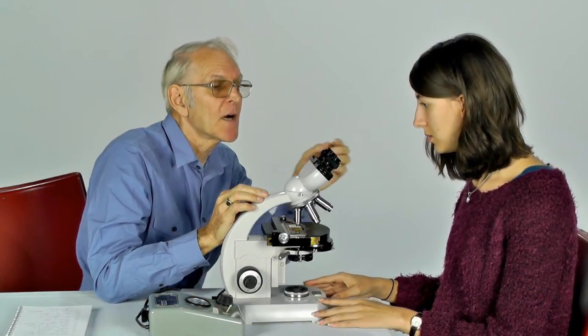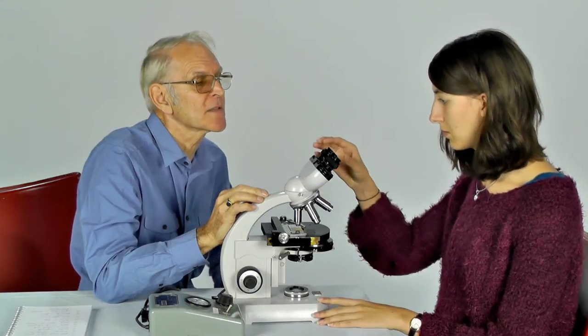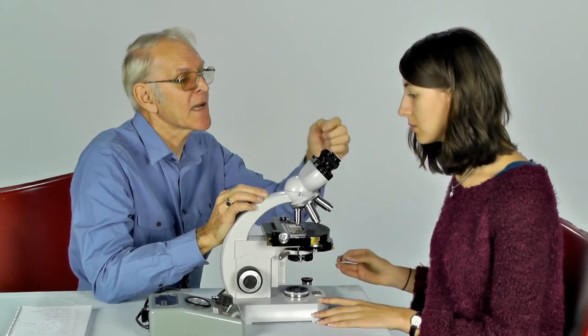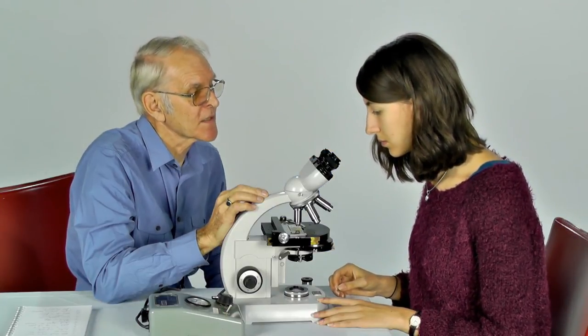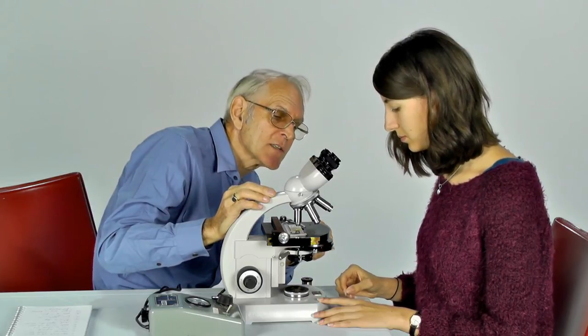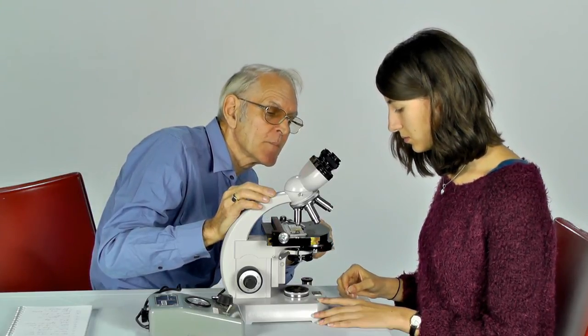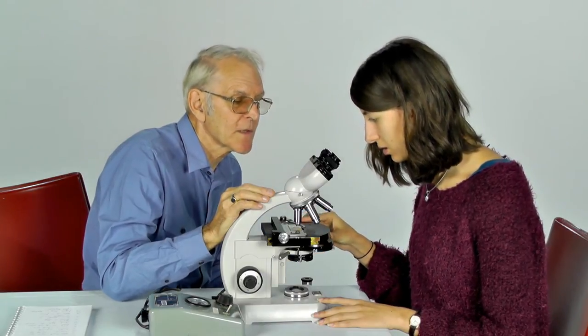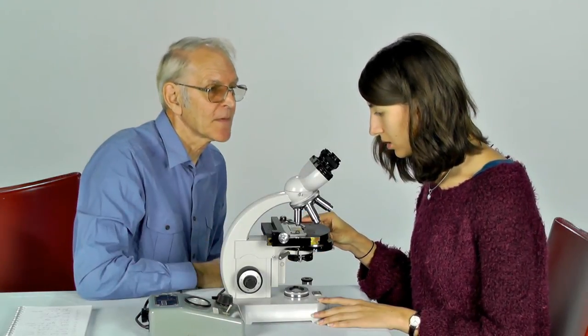So, it's a matter of taking out one of the eyepieces and if you look down, you should be able to see a circular patch of light. Yep. Now, we adjust the diaphragm below the condenser. This is called the aperture diaphragm.